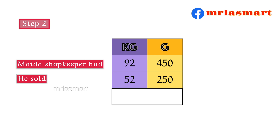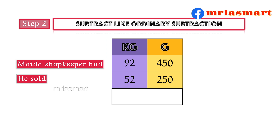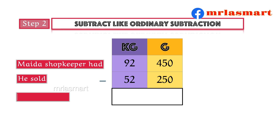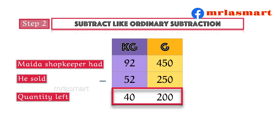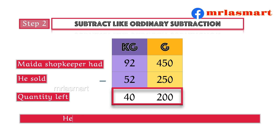Step 2: Subtract like ordinary subtraction. Quantity left. Hence, 92 kilograms 450 grams minus 52 kilograms 250 grams equals 40 kilograms 200 grams.